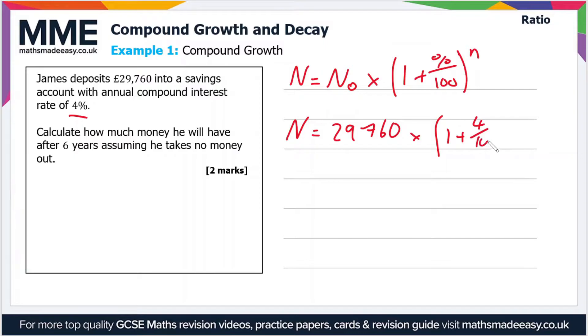So we can simplify this if we want: 29,760 times 1.04 to the power of n. Sorry, I should have said n is six years, so 29,760 times 1.04 to the power of six.